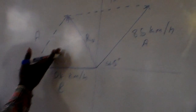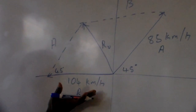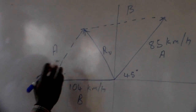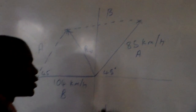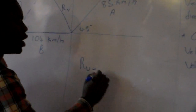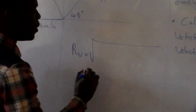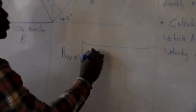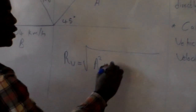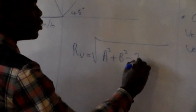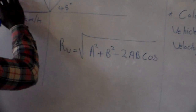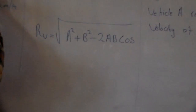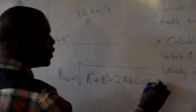The cosine rule requires two sides and an included angle. We have side A and side B, with an angle of 45 degrees between them. Therefore, the relative velocity equals the square root of A squared plus B squared minus 2A multiplied by B, times cosine of 45 degrees.